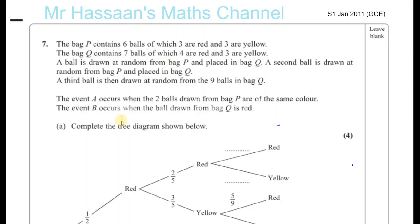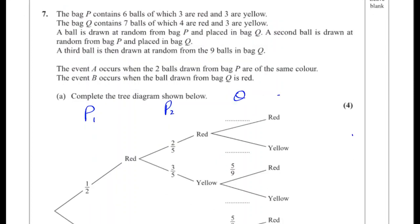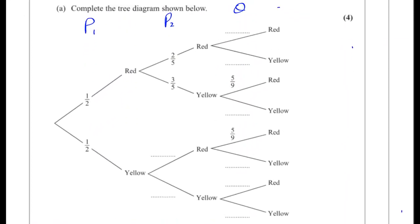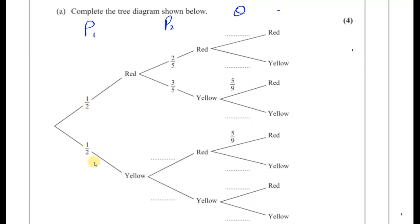A third ball is then drawn at random from the 9 balls in bag Q. So there are 3 things happening: first is a pick from bag P, the second is the second pick from bag P, and the third is a pick from bag Q. Now we've got to fill in this tree diagram. Let's look at the things they already gave us the answers for.